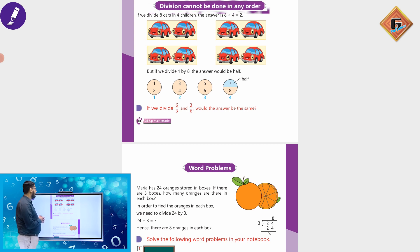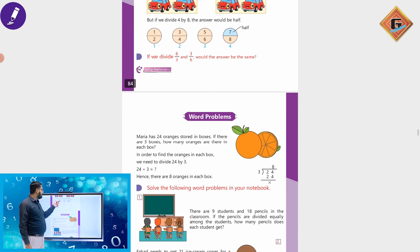Division cannot be done in any order. If we divide 8 cars in 4 children, if we divide 8 cars in 4 children, the answer would be half, so the answer is half, one by two.